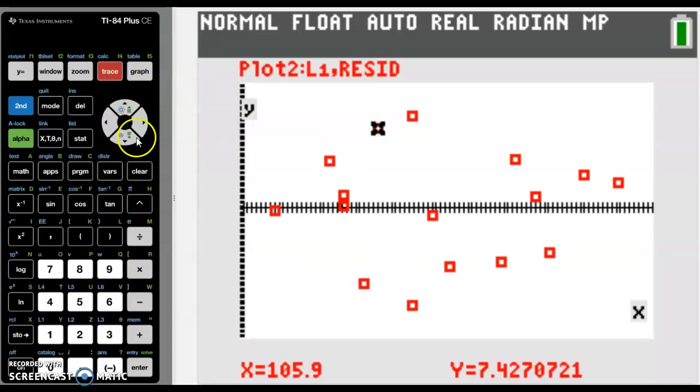And if we want to look at each point, we can trace along each point and have a look. And there you go. That's how you do a residual plot. Thanks for watching.